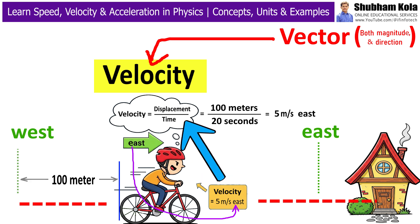The formula of velocity is displacement divided by time. Displacement means the straight line distance from where you started to where you are now in a specific direction. For example, if you travel 100 meters east in 20 seconds, your velocity will be 100 divided by 20 which is 5 meters per second east.